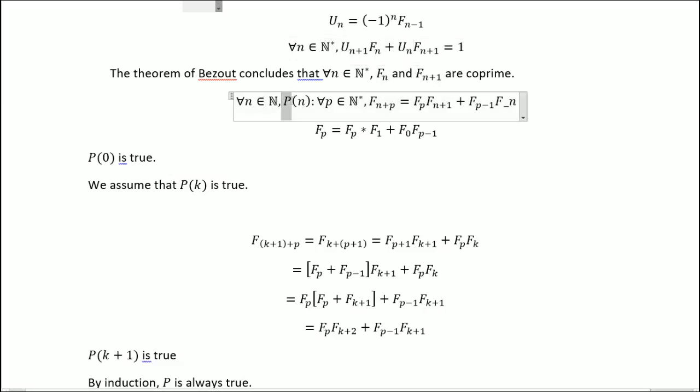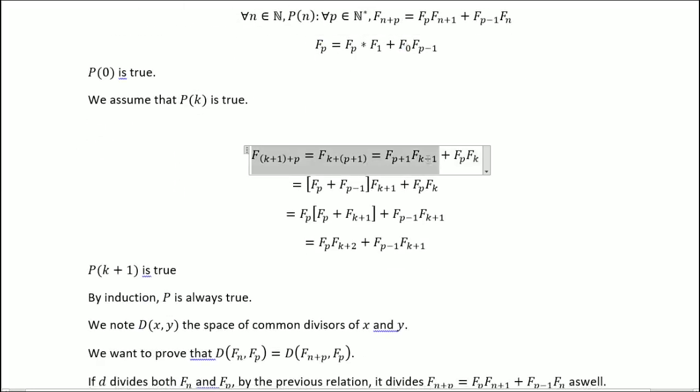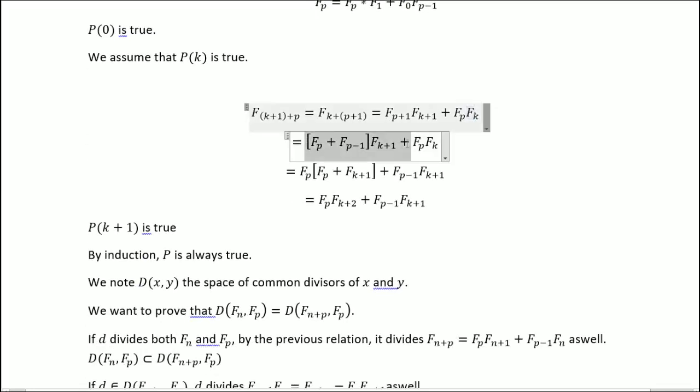So we're going to set this property P to be this. For p equal to 0, it's true here. So then we'll assume that P_k is true. We get this.